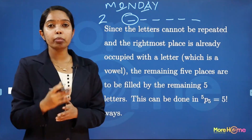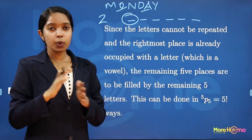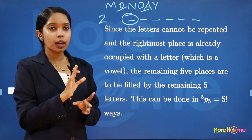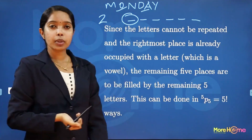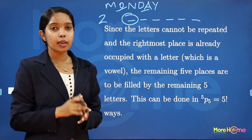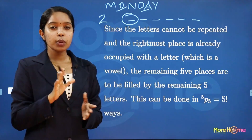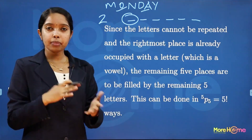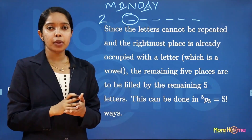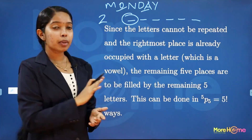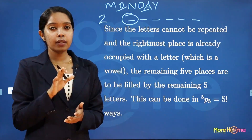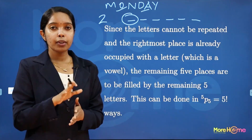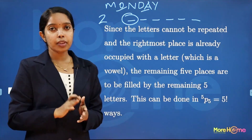After placing a vowel in the first position, the remaining 5 letters fill the remaining 5 places. The total letters are 6, so 6 minus 1 gives 5 remaining letters. We arrange all 5 remaining letters, which gives 5P5. Since all 5 letters are used in 5 places, 5P5 is the permutation.